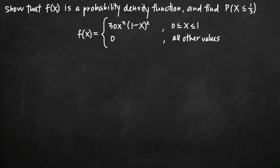Today we're going to be talking about probability density functions. In this particular problem, we've been given the function f equals 30x squared times the quantity 1 minus x squared. We've been told that this equation defines the function on the interval 0 to 1, and that the function is 0 for all other values of x — so outside of the interval 0 to 1, the function is equal to 0.